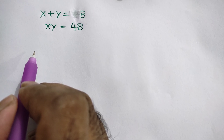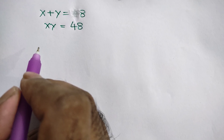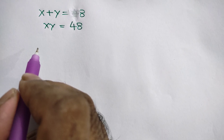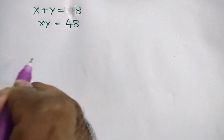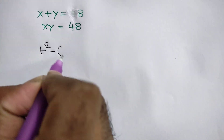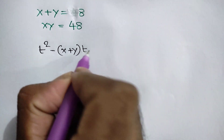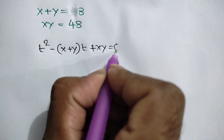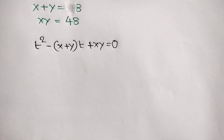This system can be solved using a quadratic equation. Let's assume x and y are the roots of a quadratic equation. The standard form based on sum and product of roots allows us to write t squared minus (x plus y) times t plus xy is equal to zero.